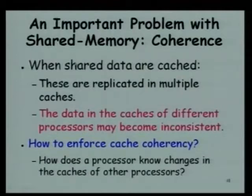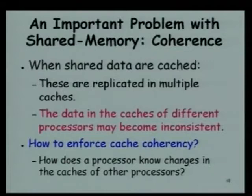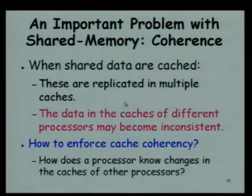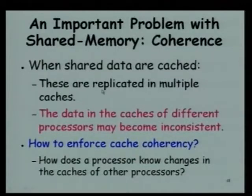Just connecting the processors together with their caches is not enough - we will have to find out what problems they create. Possibly the biggest problem is the coherence problem. If you tell anybody that you have done a course on SMPs, the first question they will ask is: what is the cache coherence problem and how is it overcome in modern processors? Please look at it carefully - give examples of how problems can arise if the caches are not coherent.